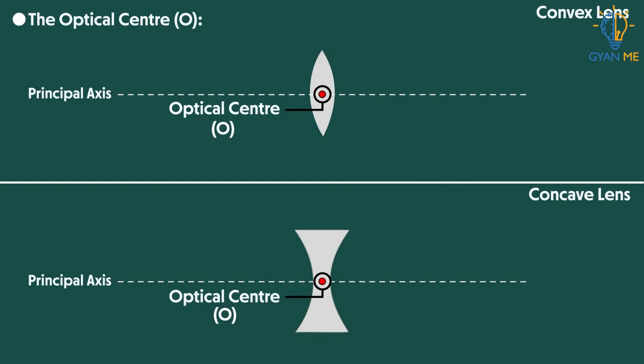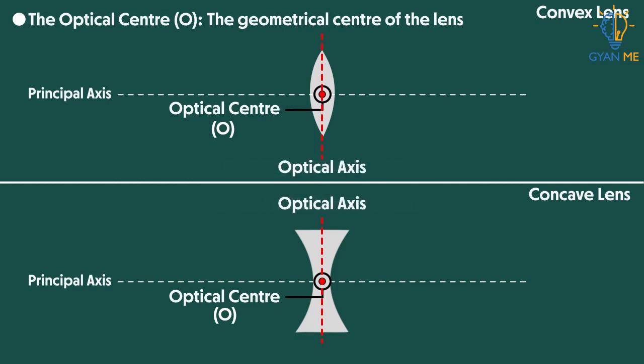Since this is the geometrical shape, the optical center is also the geometrical center of the lens. This vertical line that you see which is passing through this optical center is called the optical axis of the lens.